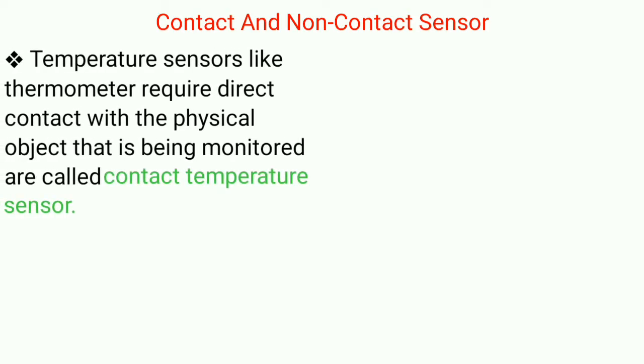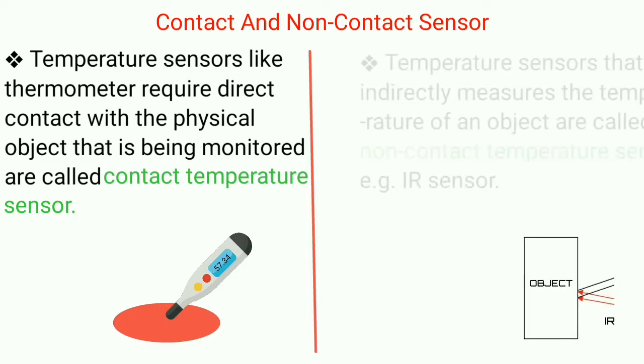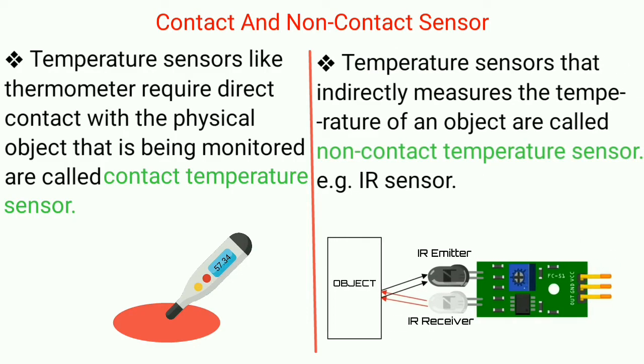Contact temperature sensors are those which require direct contact with the physical object that is being monitored. Under this comes thermistor, thermocouple, thermometer, RTD that is resistance temperature detector, semiconductor sensors etc. So let's get a brief idea about contact temperature sensors.